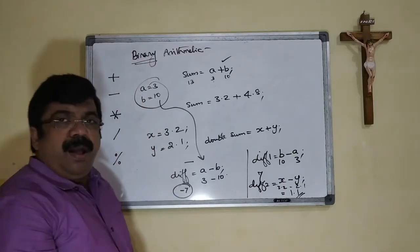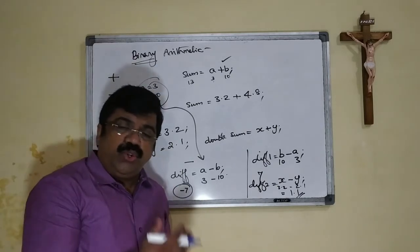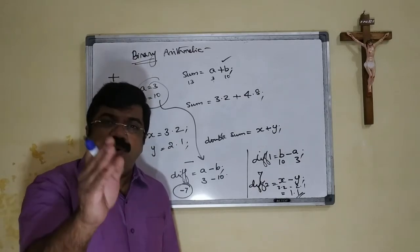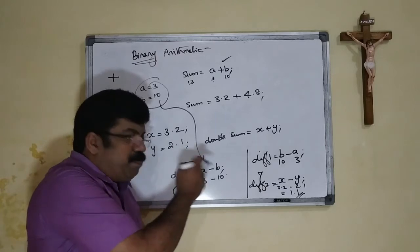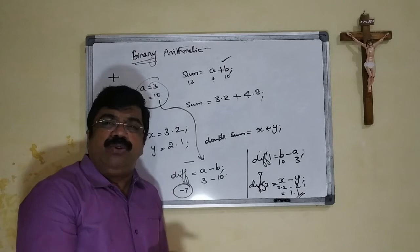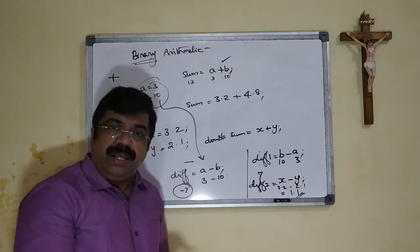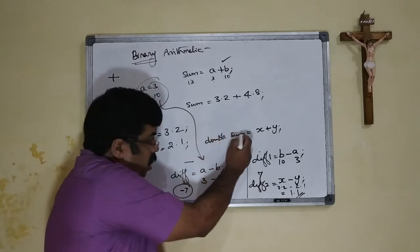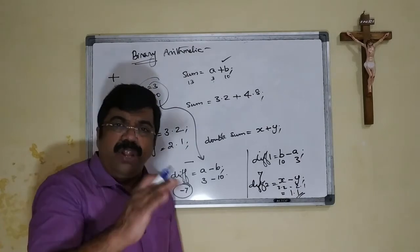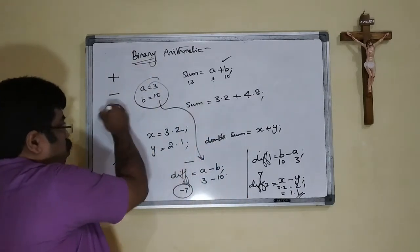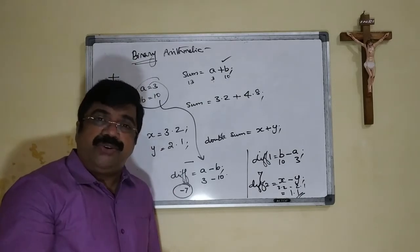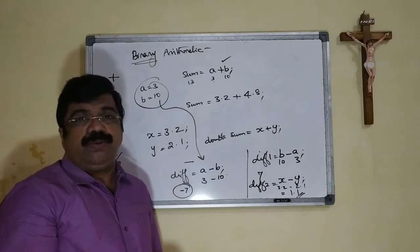One thing about the subtraction operator — the minus symbol — it can work with all the primitive data types like byte, short, int, long, as well as float and double. Now we proceed to the multiplication operator, which is used to find the product of two numbers.